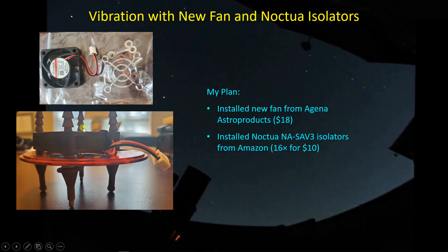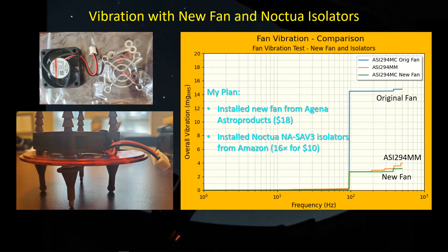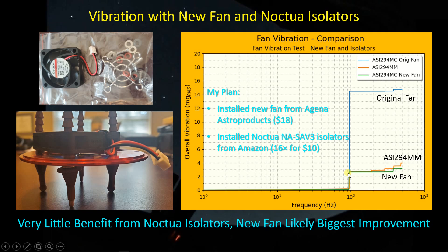My vibration mitigation plan was to install a new fan from Agena Astro for $18 and install these Noctua isolators as well, trying to provide at least some vibration isolation. The fan ends up very close to the back end of the camera, so I'm not getting a whole lot of flexibility out of these isolators. Here are the results: the gold curve is the original ASI 294 MC fan vibration, and with the new fan and Noctua isolators installed, it comes down almost precisely to where the ASI 294 MM is. The new fan is likely the biggest improvement — for all intents and purposes it brought me down to the vibration levels of the 294 MM.